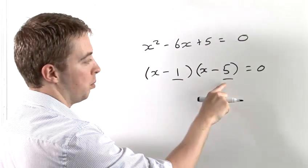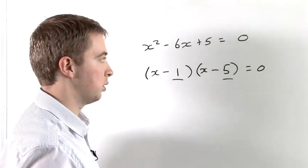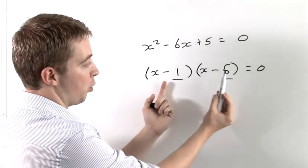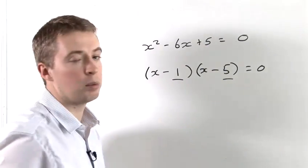So minus 1 plus minus 5 gives us negative 6. And to check, when you multiply minus 5 with minus 1, you do get positive 5.